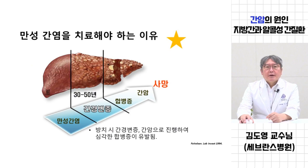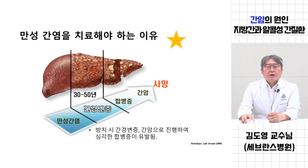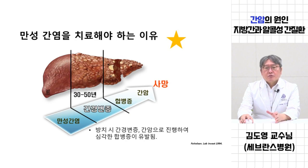만성간염이라는 것은 포괄적인 용어인데요. 바이러스, B형간염, C형간염도 포함하고, 오늘 말씀드릴 지방간에서도 염증이 생기거든요. 단순 지방간이 있고 거기에 염증이 같이 나타나는 지방간염이 있습니다. B형간염, C형간염 이런 것들이 20년, 30년, 50년 되면 간의 손상이 심해짐에 따라서 간세포가 죽게 되는 괴사가 오래되면 그 자리에 콜라겐 섬유 물질이 끼게 됩니다. 그게 섬유화이고, 섬유화의 마지막 단계가 간경변증이고, 손상된 간에서는 암이 생길 수 있다.